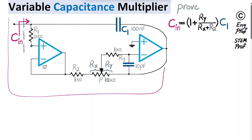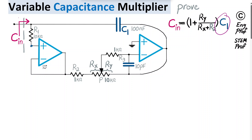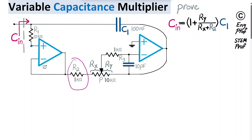We want to see how the circuit works and prove that the observed input capacitance — the input impedance of this circuit — is equal to (1 + Ry/Rx + R2) times C1, where C1 is the core capacitor with a nominal value of 100 nanofarads, Rx and Ry are the two segments of the potentiometer depending on its setting, and R2 is a constant resistor in series with Rx to ensure a non-zero denominator so the circuit remains stable when Rx equals zero.